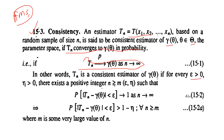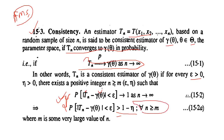In other words, Tₙ is a consistent estimator for γ(θ) if for every ε > 0, there exists a positive integer M(ε) such that for all n ≥ M(ε), the probability of |Tₙ − γ(θ)| < ε tends to 1 as n tends to infinity. This is the mathematical equation of consistency.